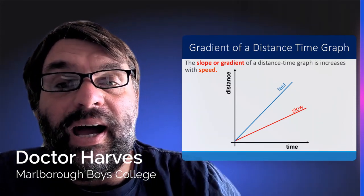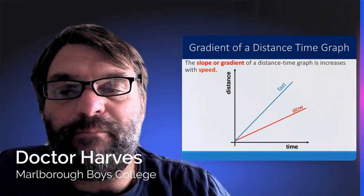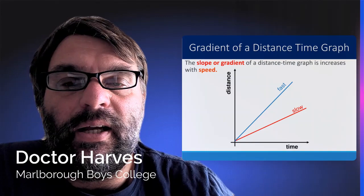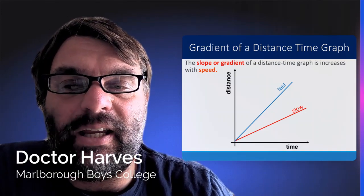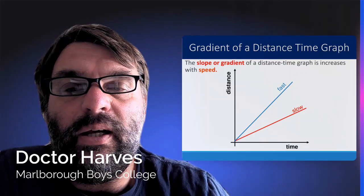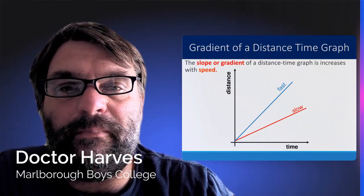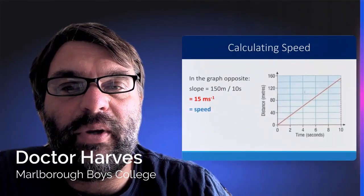So you have to be able to also calculate the velocity or speed of an object from a distance time graph by taking the gradient, which is the change in distance, change in the y-value divided by the change in the x.